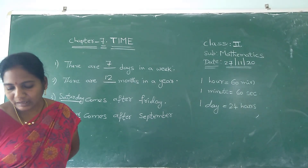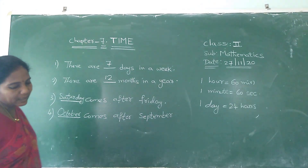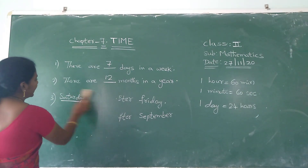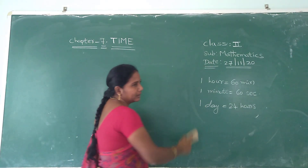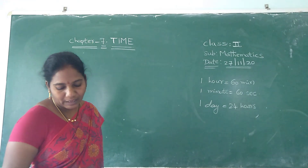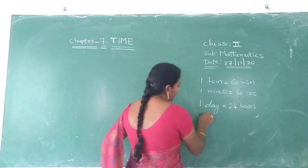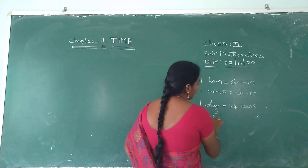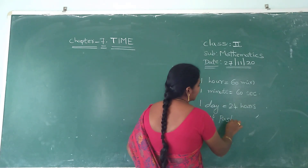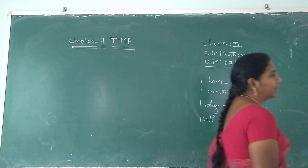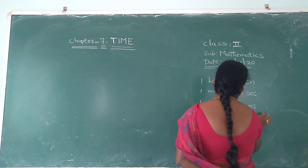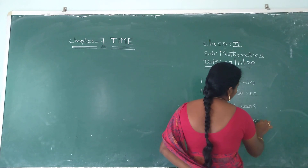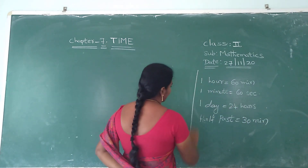You have to learn the next step: half past. Reading the time in half an hour. Half past means 30 minutes. Half past is equal to 30 minutes. How many minutes? 30 minutes.